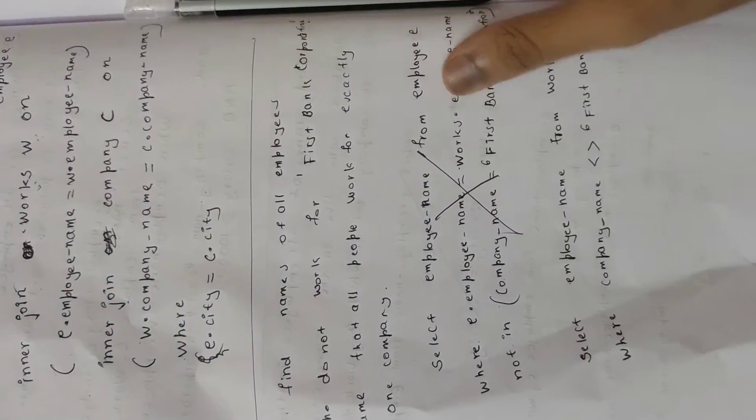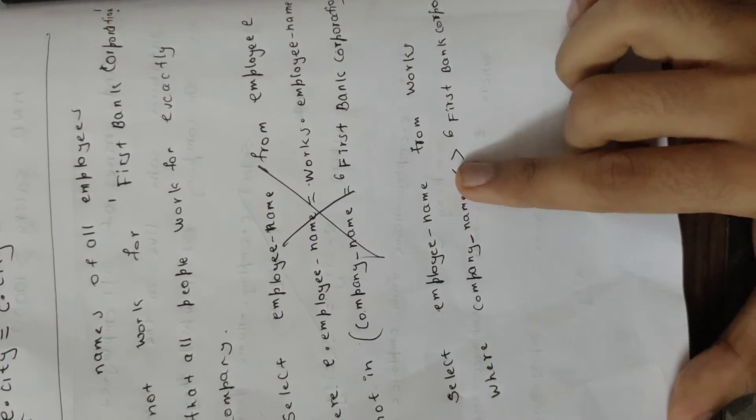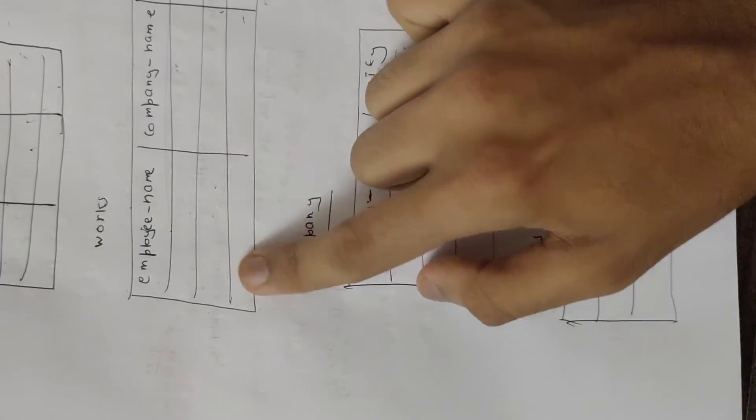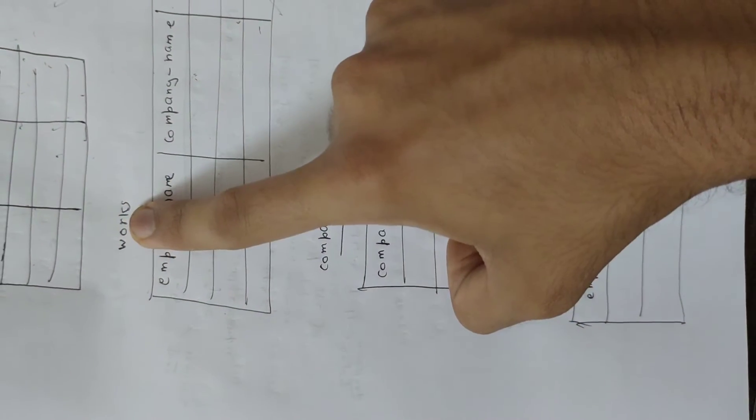So let's get query from a simple one. Select employee name from work - employee or employee name of work table in the text.